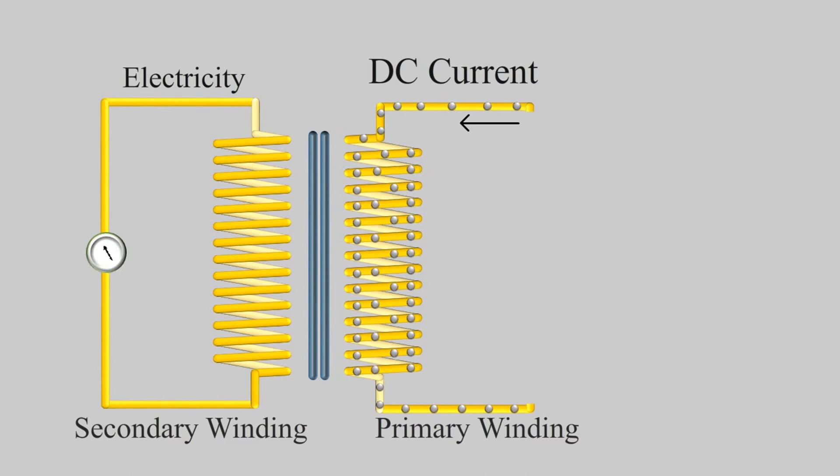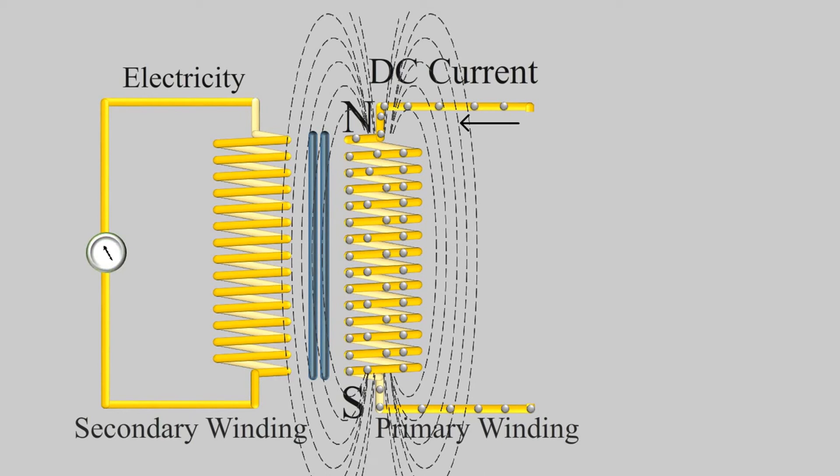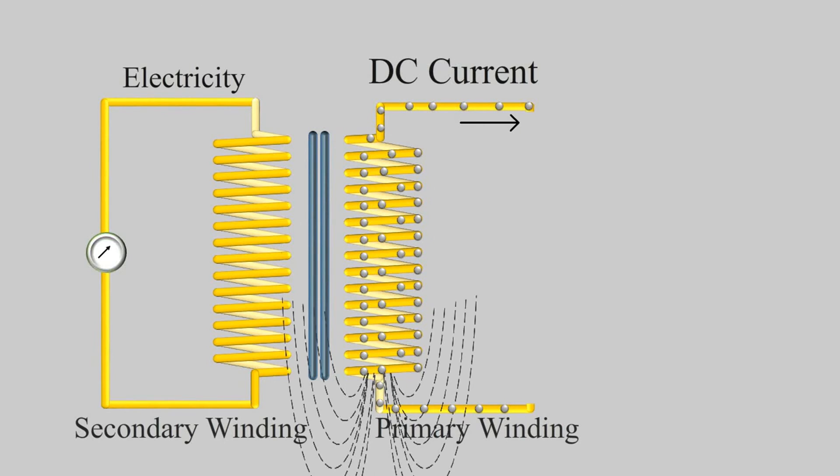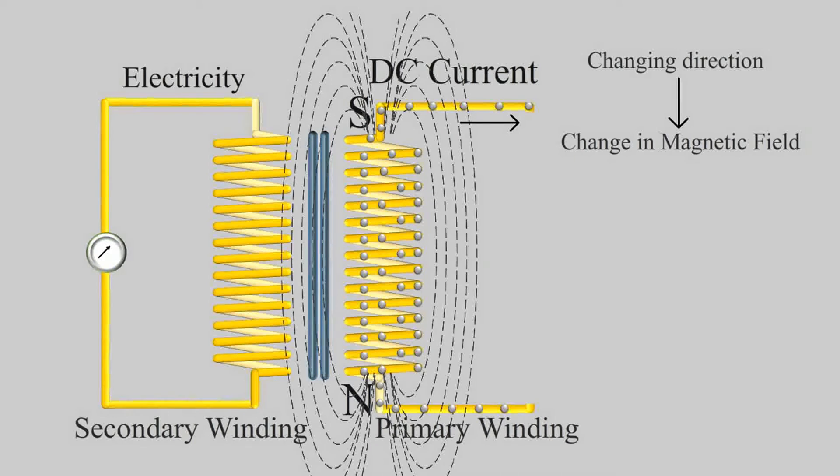When current flows this way then this side becomes north and this becomes south. Now if we change the direction of flow of current then this side becomes north pole and this becomes south. So we get change in magnetic field by changing the direction of flow of current.